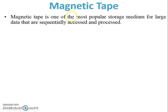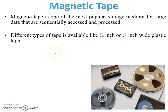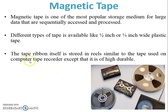Magnetic tape is one of the most popular storage medium for large data that are sequentially accessed and processed. It is very old technology. Different types of tape are available in the market, like 1/2 inch or 1/4 inch wide plastic tape. This tape ribbon is stored in reels, similar to the tape used on a computer tape recorder, except that it is of high durability.